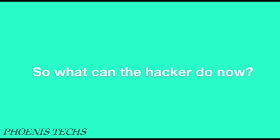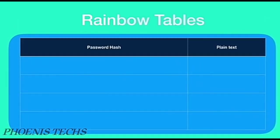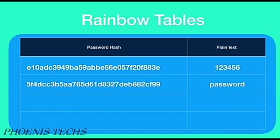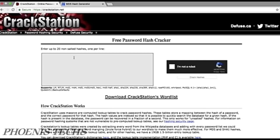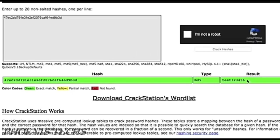This is when the strength of the password comes into play. If you are using a common password like 'test123456', the hacker can easily find the plain text form from the hash string using something known as rainbow tables. Rainbow tables contain the password hashes of numerous commonly used passwords along with their plain text forms. The hacker does a simple search with the password hash, and if it exists in the rainbow table, the password is successfully cracked. As a reference, you can try this yourself at crackstation.net.